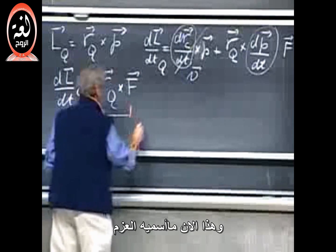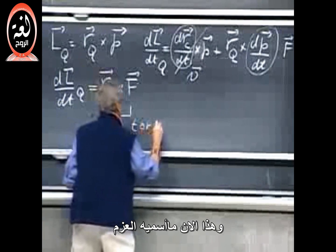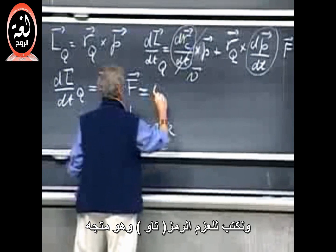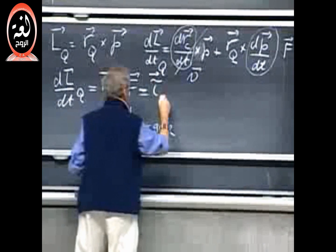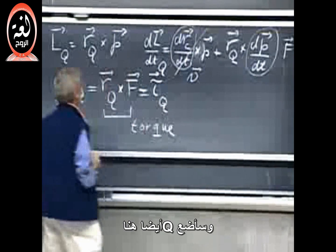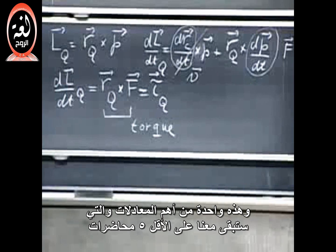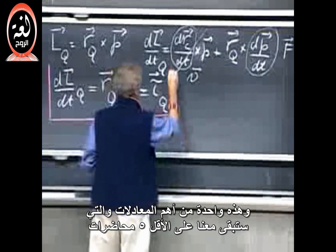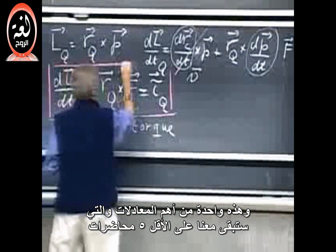And this now is what we call torque. And we write for that the symbol tau. It is a vector, and I put in that Q again. And this is one of the most important equations that will stay with us for at least five lectures.